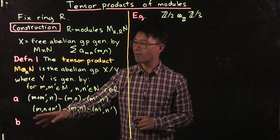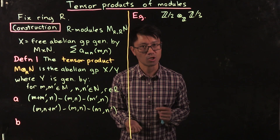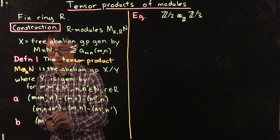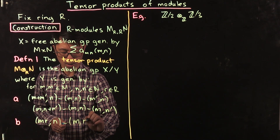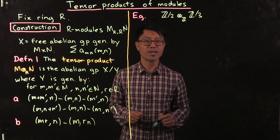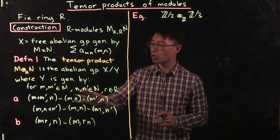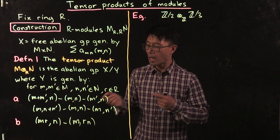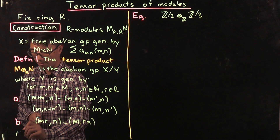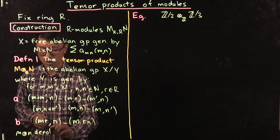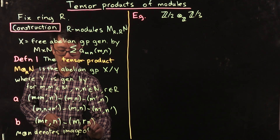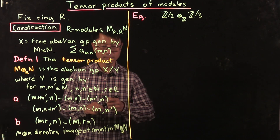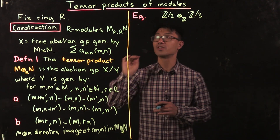Lastly, we have things which involve the ring — we haven't used the module structure of M and N yet. So we also include the following difference of elements: (mr, n) minus (m, rn). Once you have this, you have a subgroup Y generated by all these elements, and the quotient abelian group X/Y is the tensor product of M with N. As usual, we use notation: m ⊗ n denotes the image of the pair (m, n) in M ⊗ᴿ N.